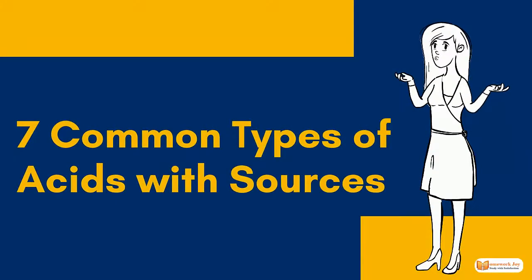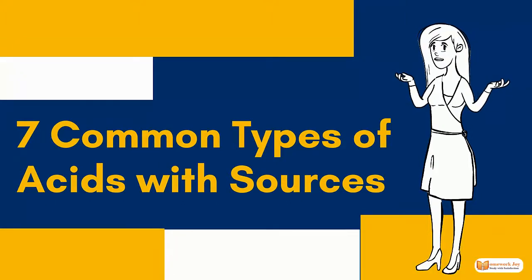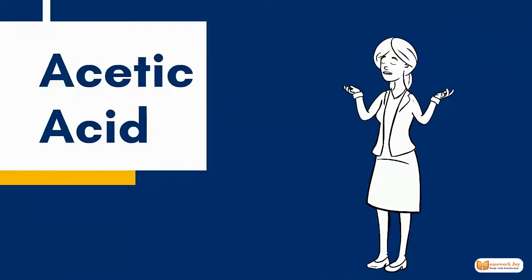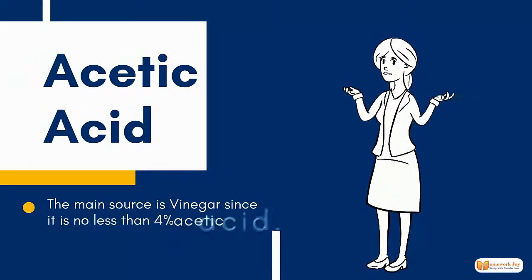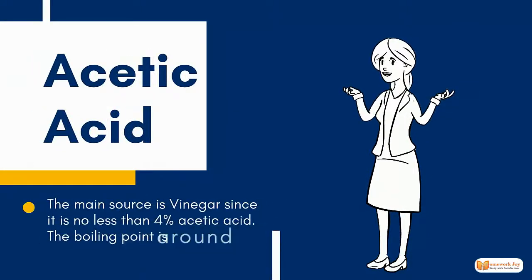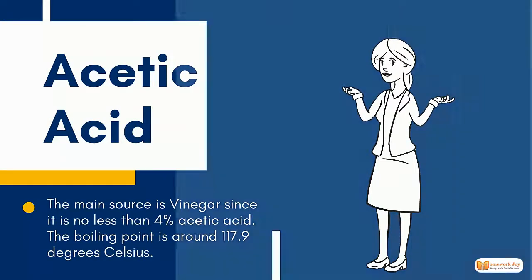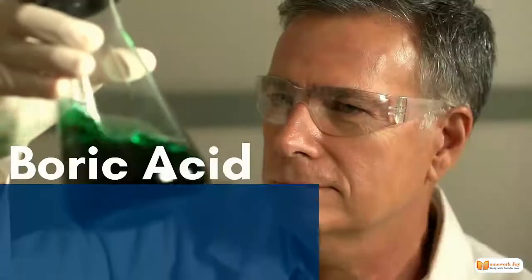7 Common Types of Acids with Sources. Acetic Acid: The main source is vinegar, since it is no less than 4% acetic acid. The boiling point is around 117.9 degrees Celsius.